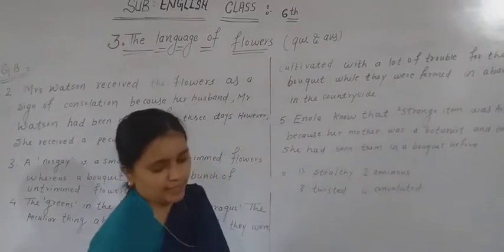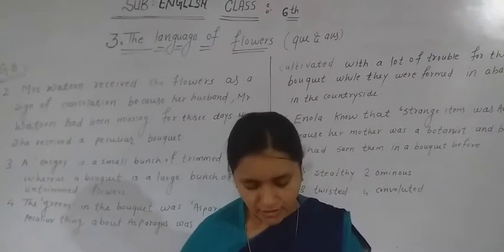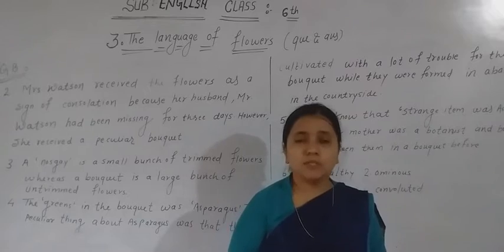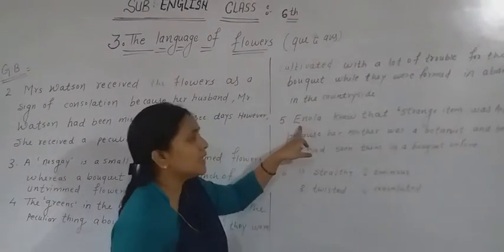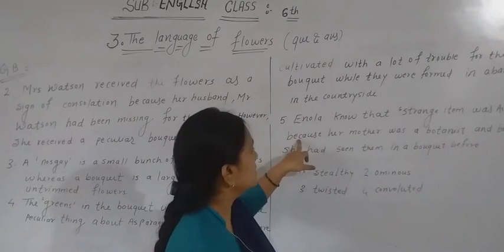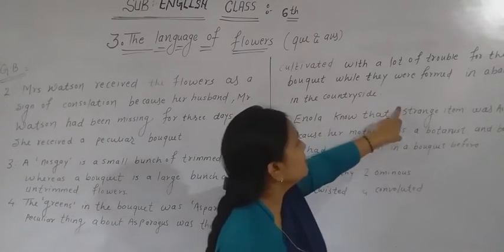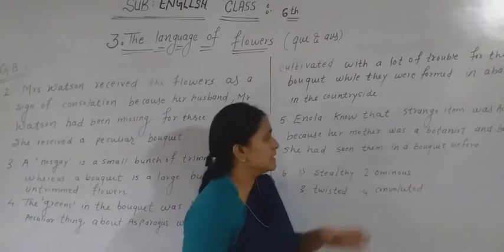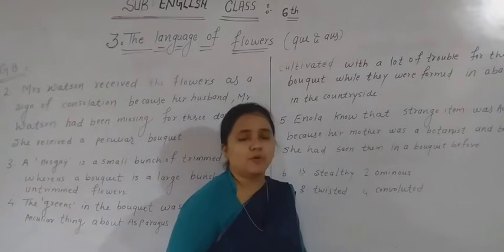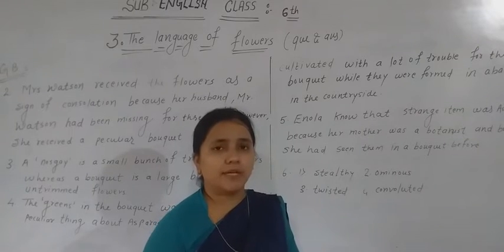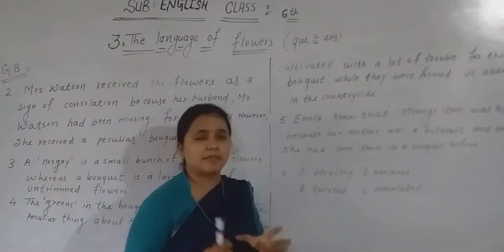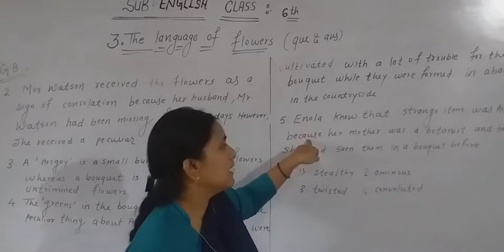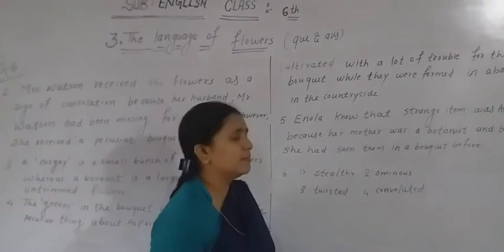Question five: how did Enola know the strange item in the bouquet was asparagus? Enola knew that the strange item was asparagus because her mother was a botanist — a person who studies plants. Also, she had seen asparagus used in a bouquet before. So just copy down: Enola knew the strange item was asparagus because her mother was a botanist and because she had seen them in a bouquet before.